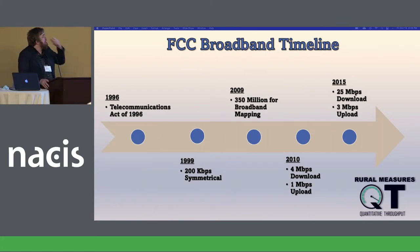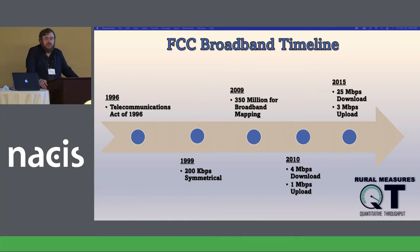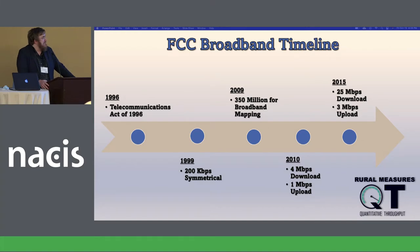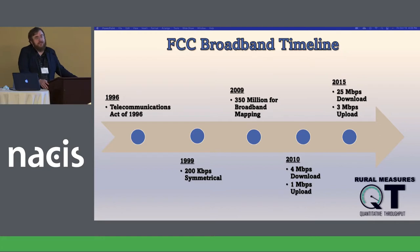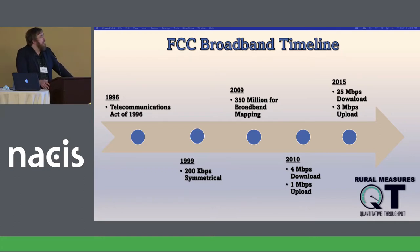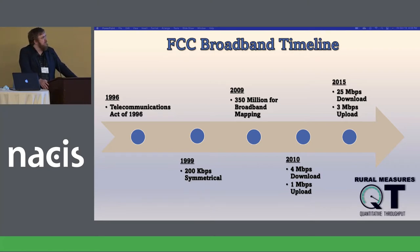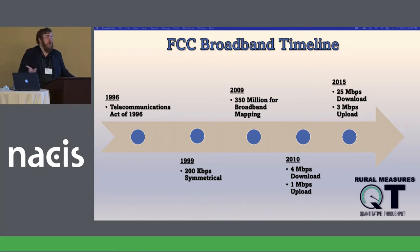Here's a brief timeline of broadband. The U.S. Telecommunications Act of 1996 established the principle that there should be broad-level equality between rural and urban areas. In 1999, the first FCC definition was established: 200 kilobits symmetrical, which was actually a decent speed back then. And in 2009, Congress allocated $350 million independent of the FCC to map broadband, allocated at the state level and restricted to only non-profits.